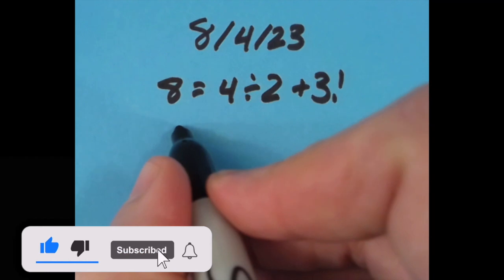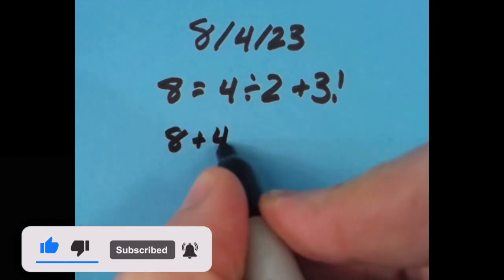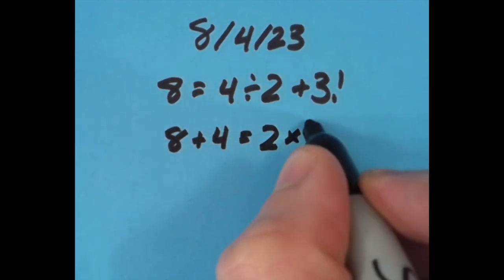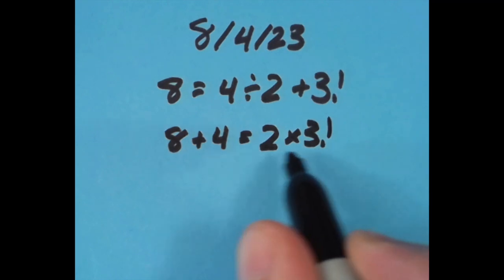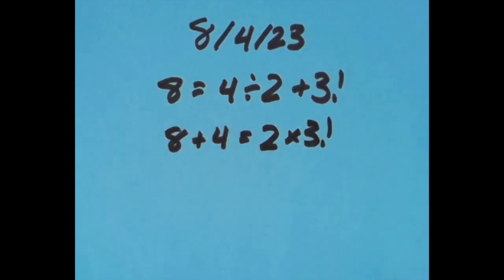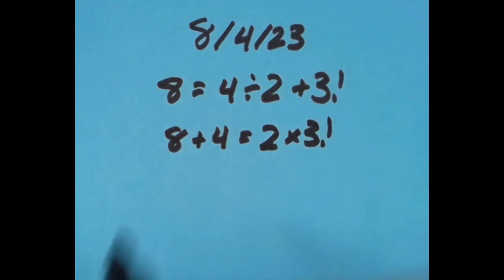Here I said that 8 plus 4 is 12, and so is 2 times 3 factorial, because again this is 6, so 2 times 6 is 12, just like the 8 plus 4.